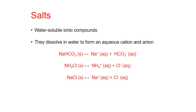Salt is a general term that refers to any water-soluble ionic compound. It includes sodium chloride, table salt, as well as a wide assortment of other ionic compounds. When these compounds dissolve in water, they produce aqueous cations and anions in solution. It is the production of these cations and anions that ultimately can influence the pH of the solution.